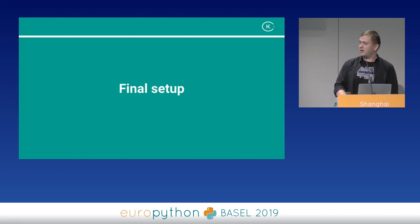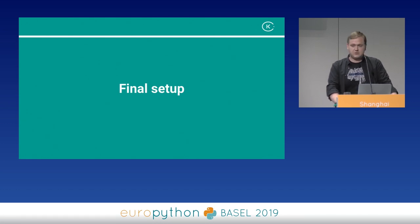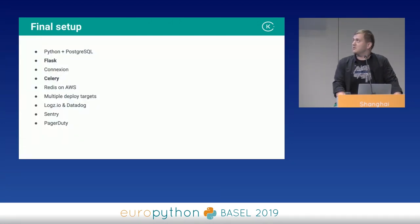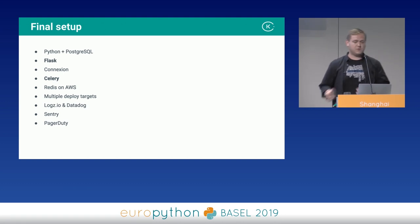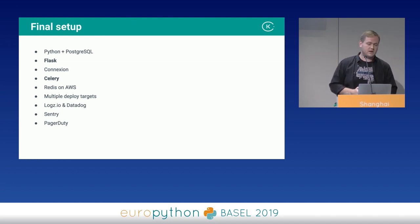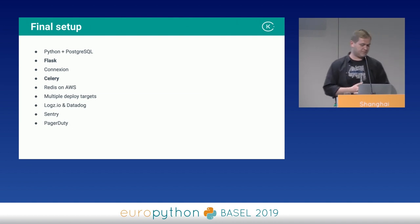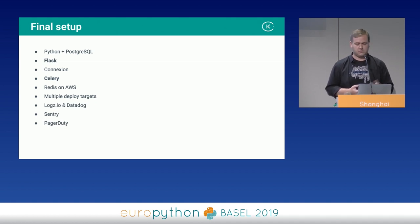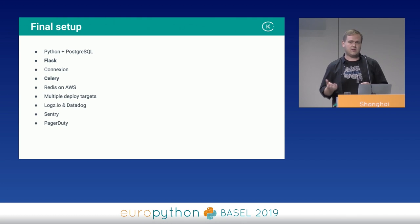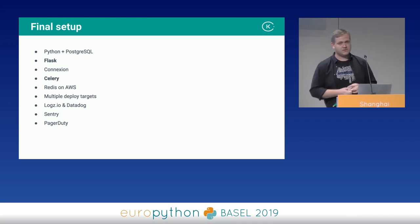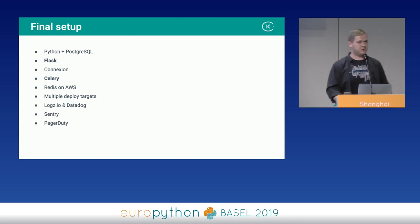With that, in our finance tribe, we arrived at a final setup. We use Python and PostgreSQL, on top of which we have Flask or currently aiohttp. Together we have Connexion, which takes care of the REST API. We use Celery, Redis on AWS as the broker, multiple deploy targets in our CI pipeline, and LogsIO and Datadog for monitoring, slowly shifting everything to Datadog. When something goes really wrong, we use Sentry and PagerDuty for alerts.